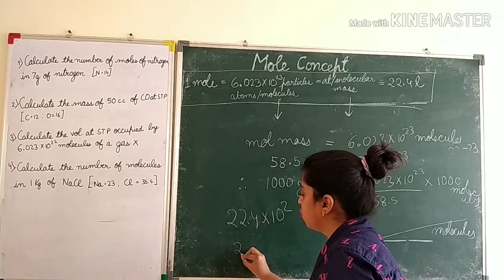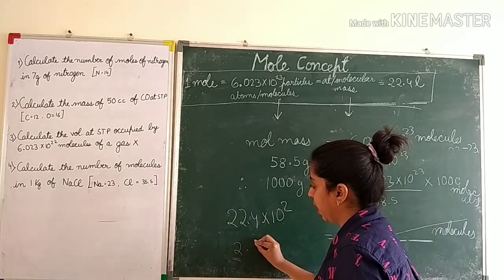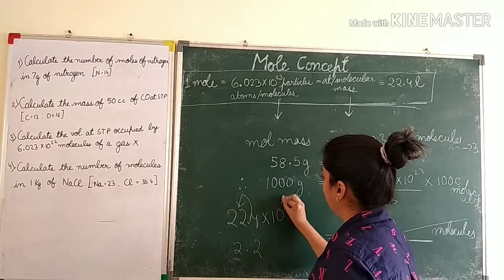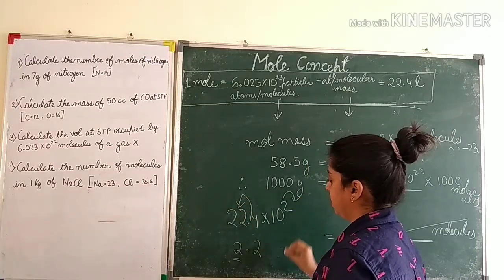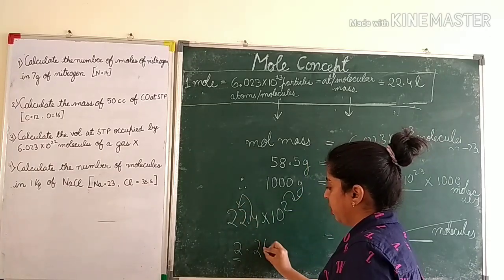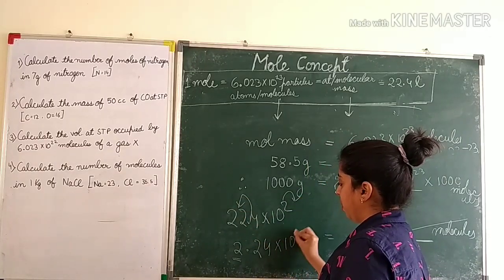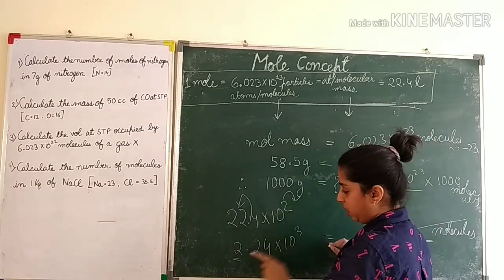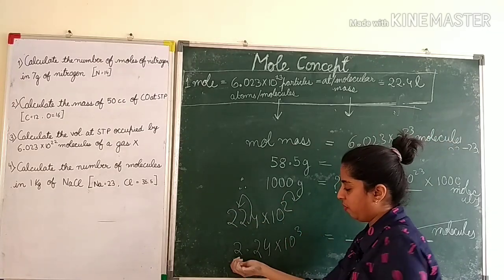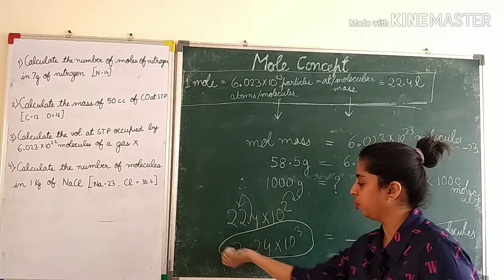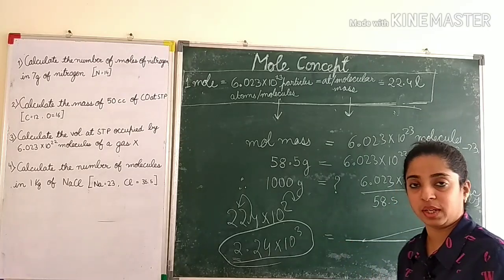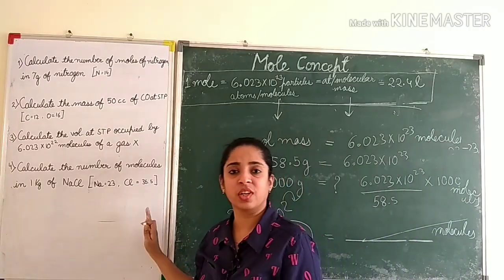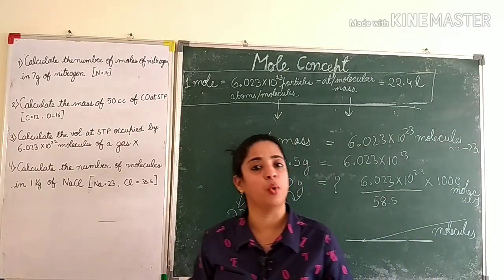Always write your final answer in proper scientific notation — for example, don't leave it as 22.4 × 10², instead write it as 2.24 × 10³. This is how you solve all questions related to moles.